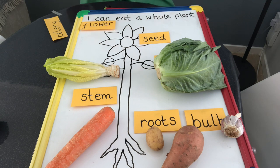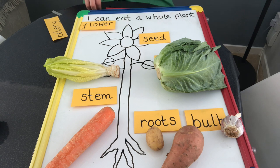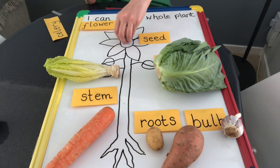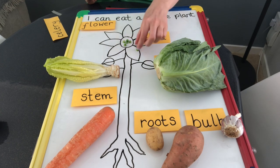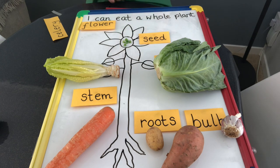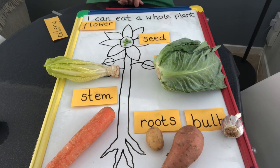Now the seeds in the centre — if you remember from last week, we do eat sunflower seeds and pumpkin seeds and sesame seeds, but also peas are a type of seed and we definitely eat peas and corn. So there are the seeds that we eat.